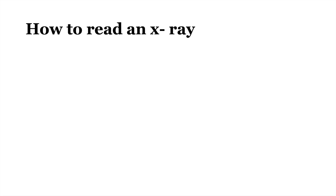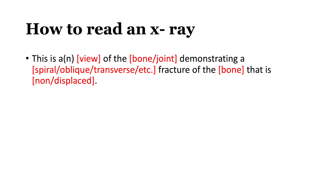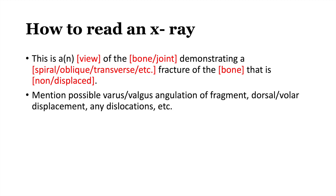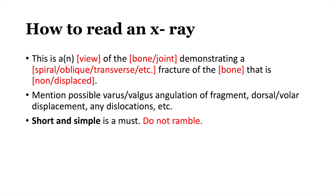So, how to read an x-ray. This is the template you're going to use: 'This is a blank view of the bone or joint demonstrating a quality of the fracture' — so spiral fracture, oblique, transverse, like an adjective — 'fracture of the whatever bone that is displaced or non-displaced,' and you can give a direction, such as varus or valgus angulation, or dorsal volar angulation. Also note any dislocations. Short and simple is a must — do not ramble. This is a surgical subspecialty and brevity is king. Even if you're unable to give every single detail, if you get the correct bone or joint and the correct type of fracture, follow-up questions will further qualify the x-ray read.